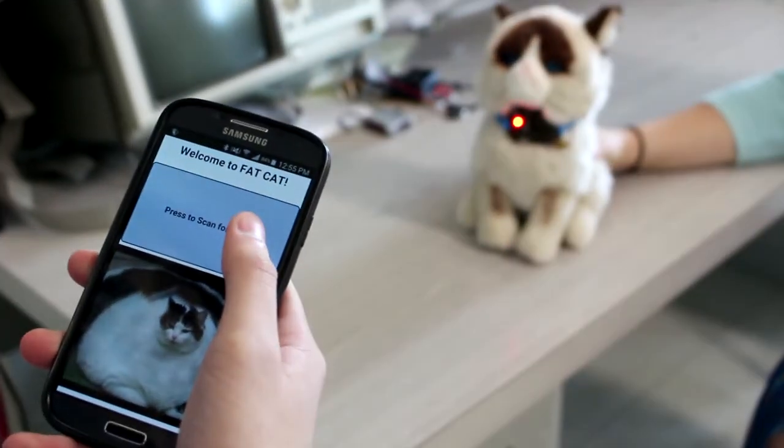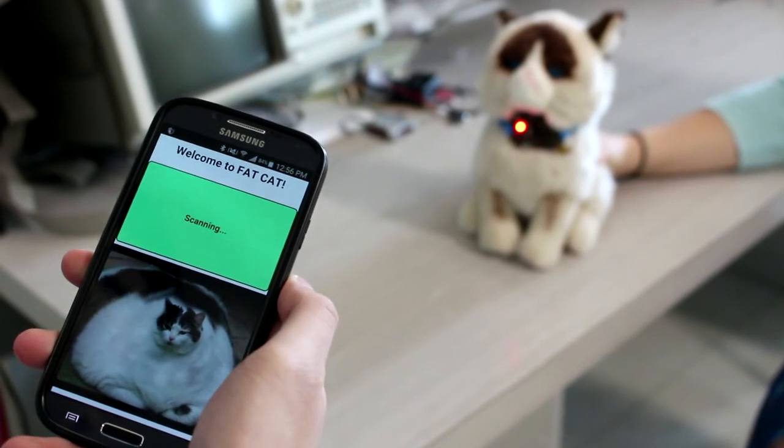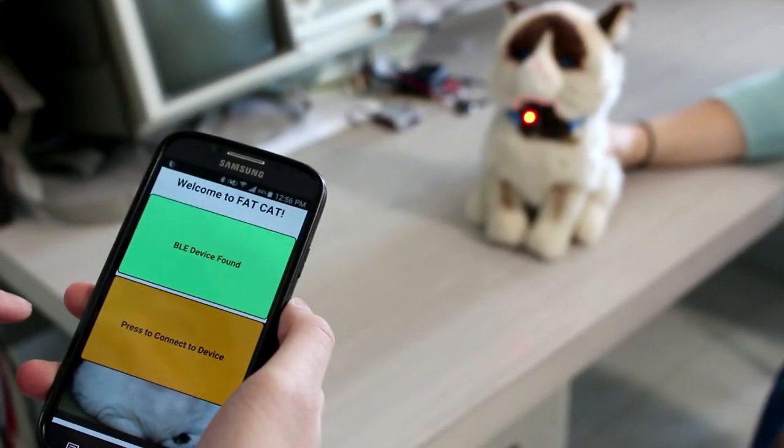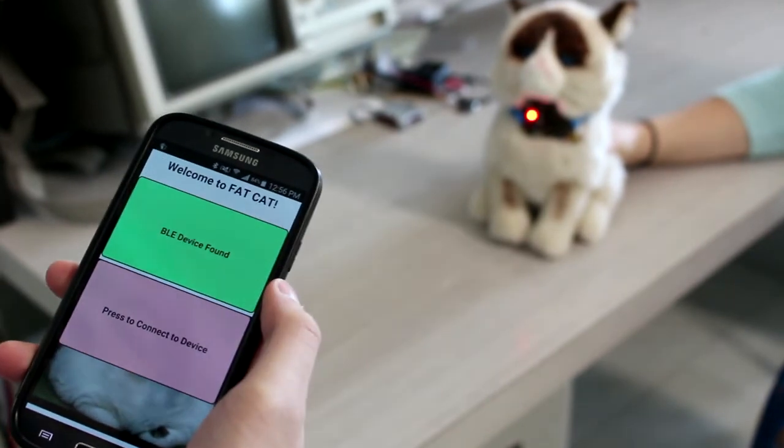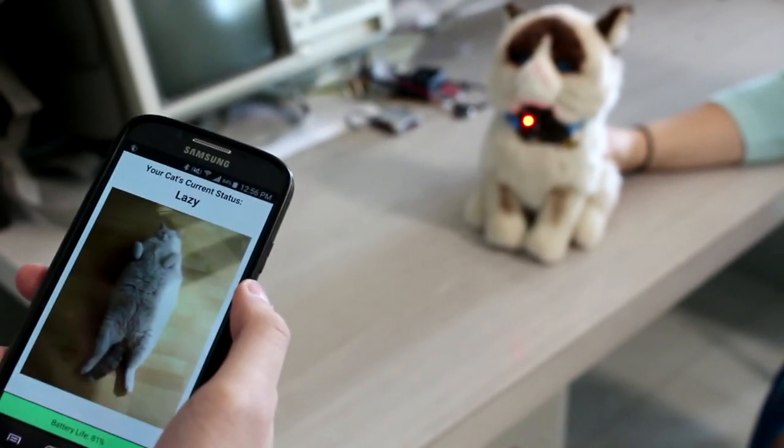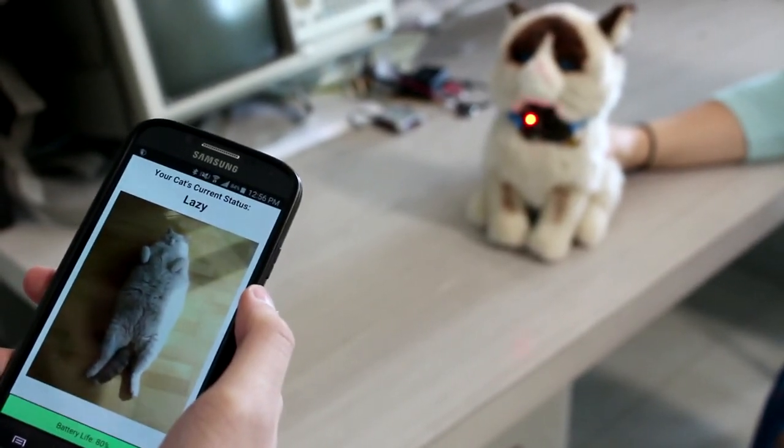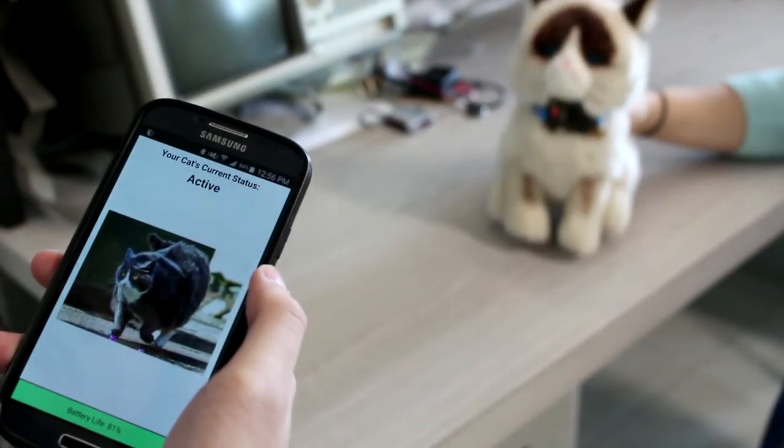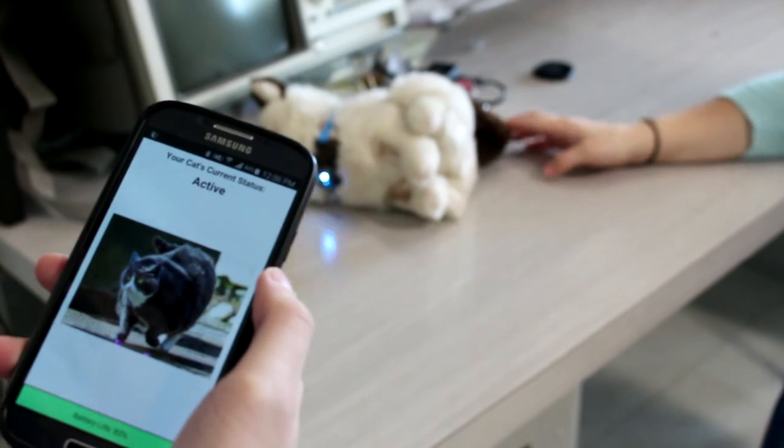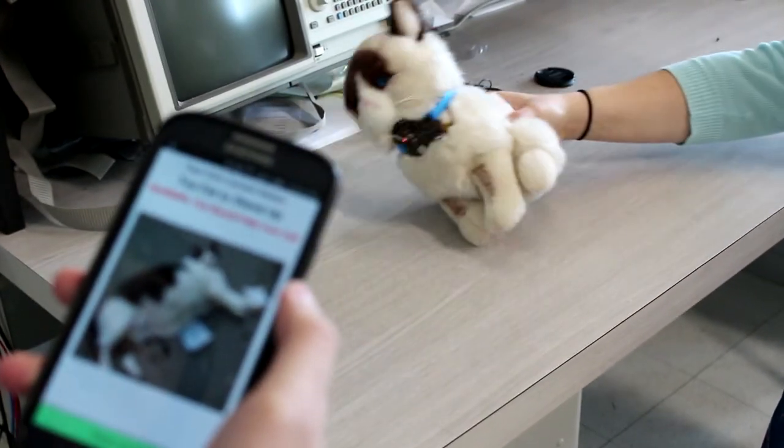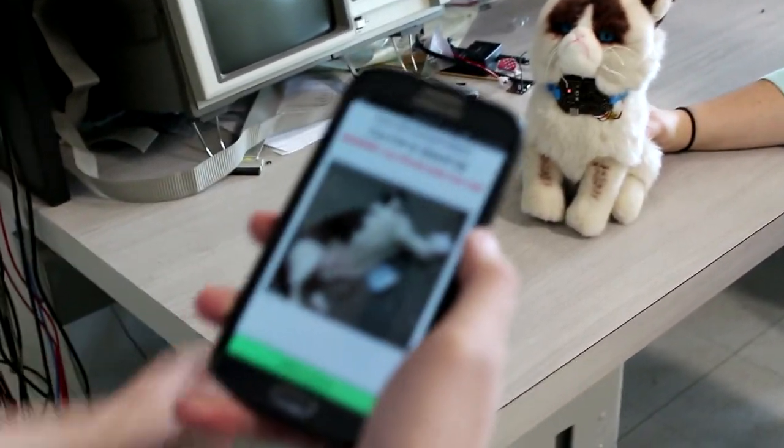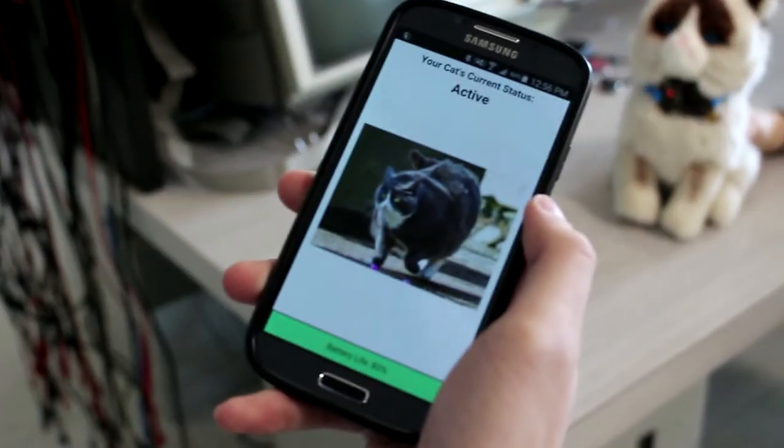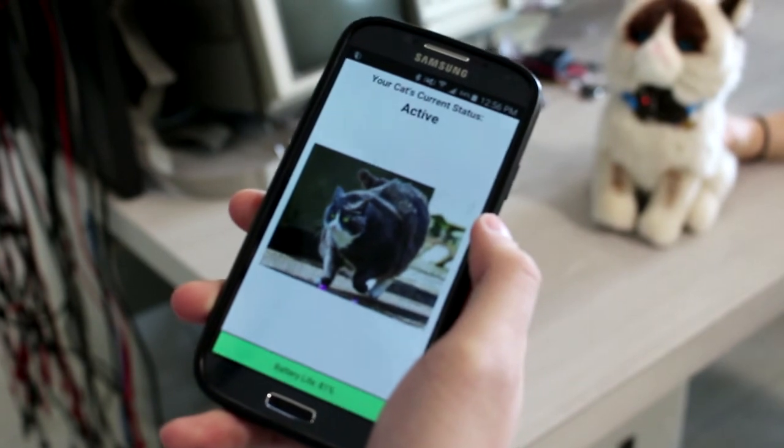Here is a demonstration of our app with our cat. First, I will start scanning for the device. After it has finished scanning, I will connect to the device. It will then take me to the main interface and tell me what state the cat is in. Right now, it is being lazy. Once the collar shakes, the cat will be in active mode. If the cat falls over while in active mode, it will then go into the too fat state. In this case, I will have to press the button on the collar in order to save the cat. Then the cat will return to active mode.